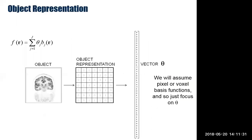More explicitly: we assume pixel basis functions in our model of the object representation, and what we're seeking are the parameters theta_j — capital J parameters. Showing a coronal slice through a brain crudely discretized into a 7×7 array, we can rearrange those coefficients — those grayscale pixel values — into one single column vector theta. Our task is to estimate theta from the measured data.